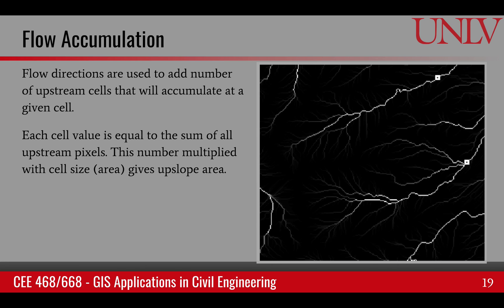The next step is finding flow accumulation. Flow directions are used to find where all of the flow is being accumulated. For each cell, a value is assigned — that value is the sum of all the pixels contributing to that cell. The cells at the upstream limits are dark, but as we move towards downstream, the brightness increases, meaning more and more pixels are contributing. Through this process of flow accumulation, we also see the emergence of the stream network as bright lines.